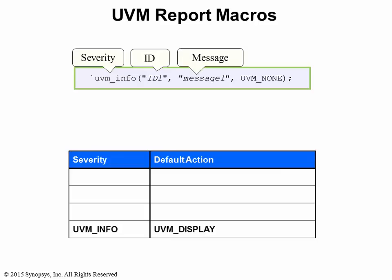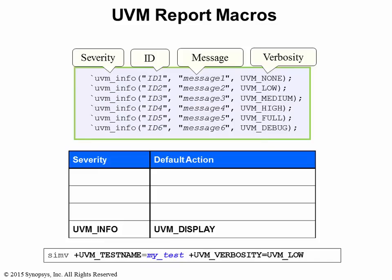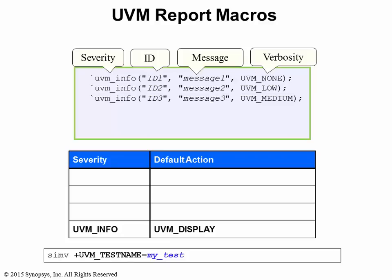The second argument is the message field — whatever you want to display should be embedded here as a string. The third argument is the verbosity level to which the message belongs. The term verbosity means amount of messages. There are six possible verbosity levels in UVM. UVM provides a runtime switch to let the user choose the verbosity level during simulation. If you set the verbosity to UVM_LOW, then you want to see a low amount of messages, so messages set at higher verbosity levels are filtered out. If you do not specify the verbosity, the default is UVM_MEDIUM, meaning you will see UVM_MEDIUM, UVM_LOW, and UVM_NONE messages, while UVM_HIGH, UVM_FULL, and UVM_DEBUG messages are filtered out.